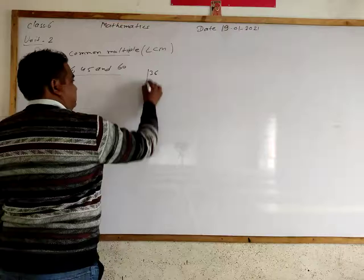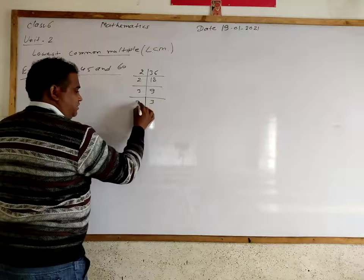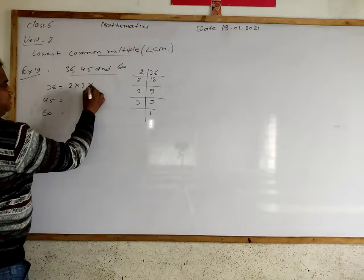So prime factor of 36, we divide by 2, we get 18. Now again divide by 3, we get 9. Now divide by 3, we get 3. Again divide by 3, we get 1.